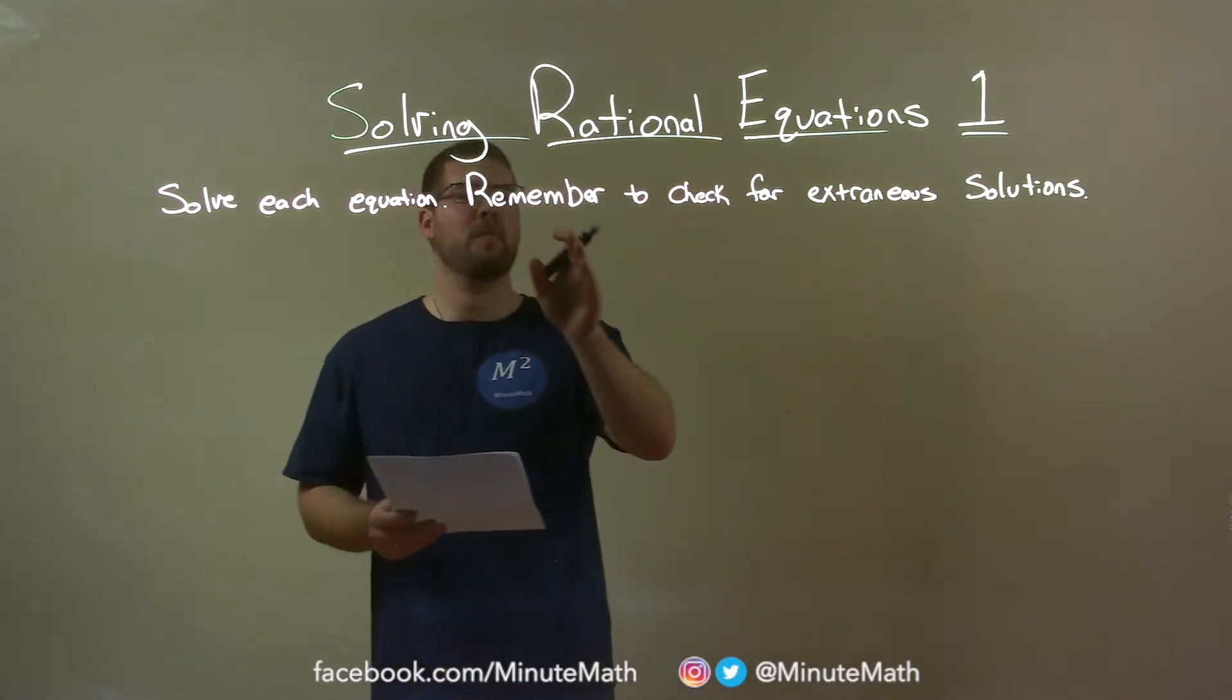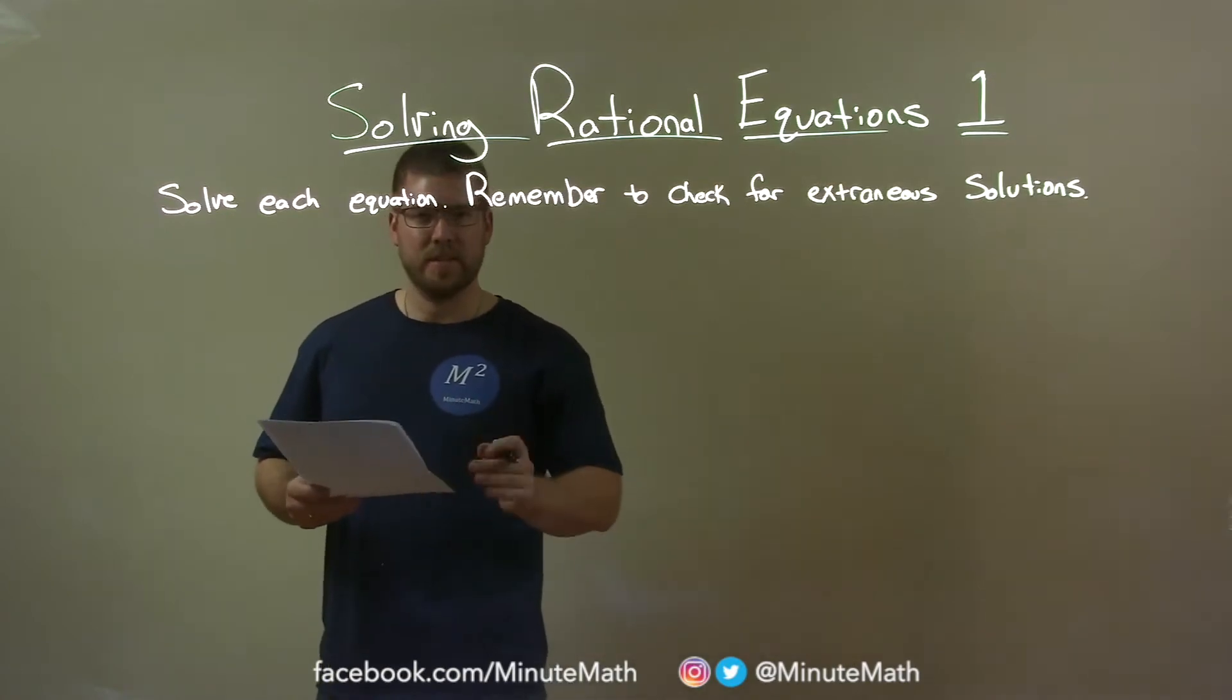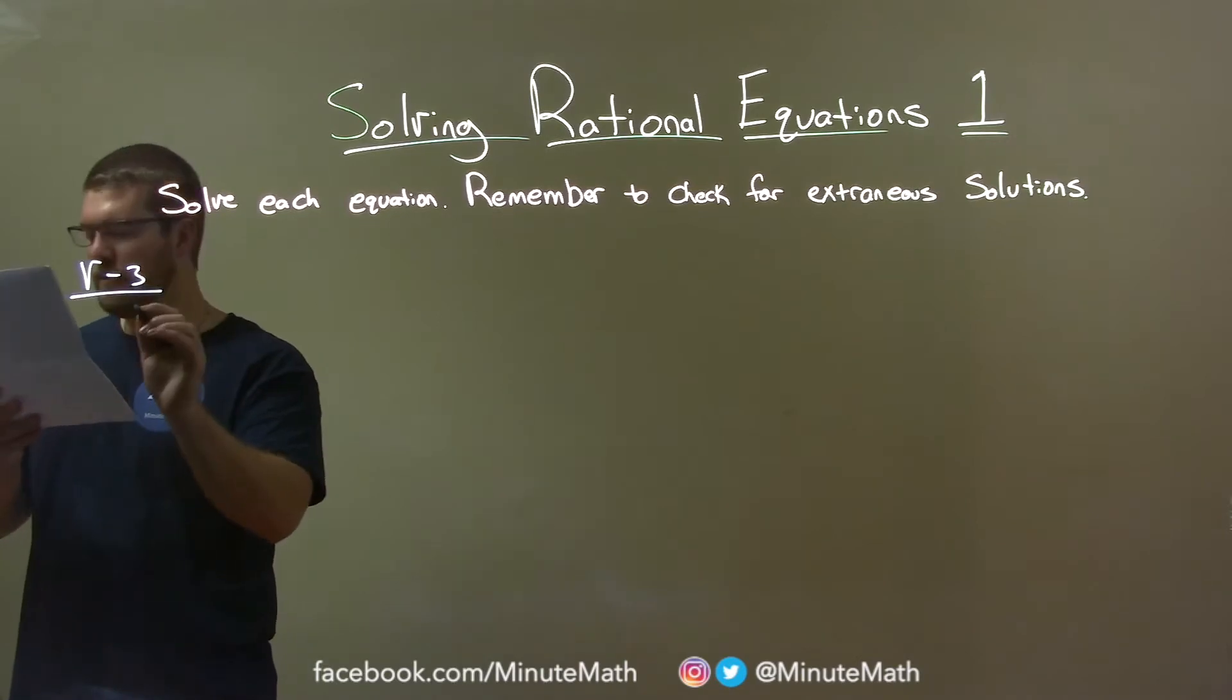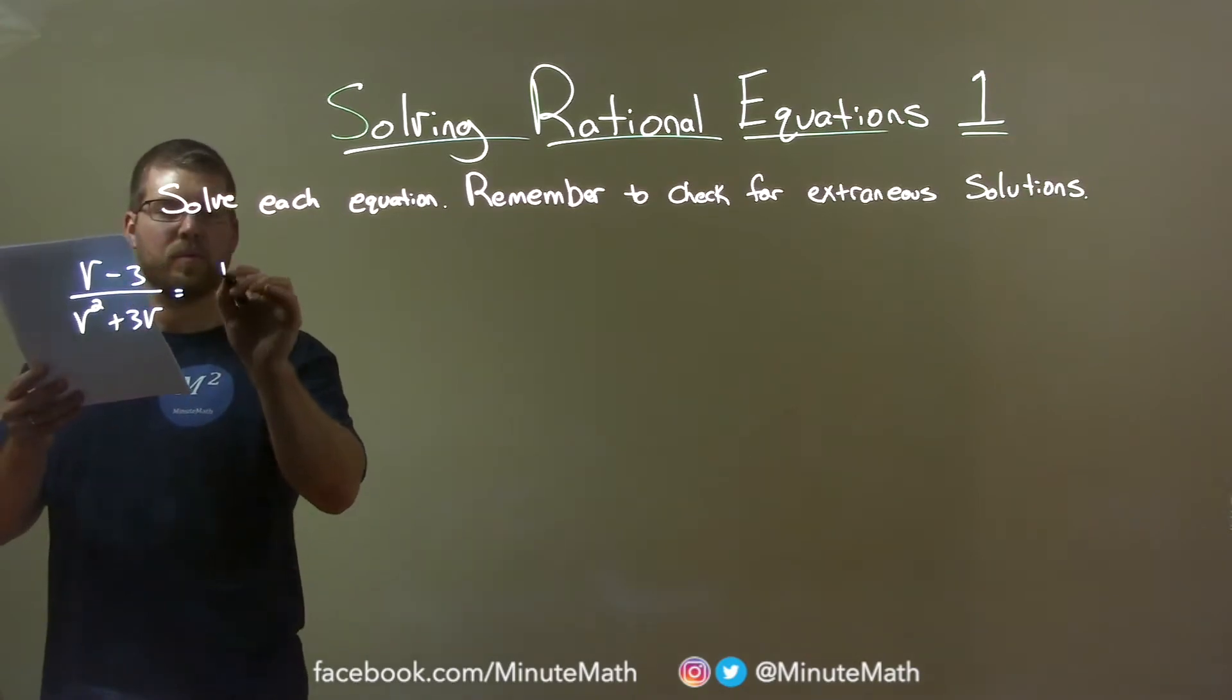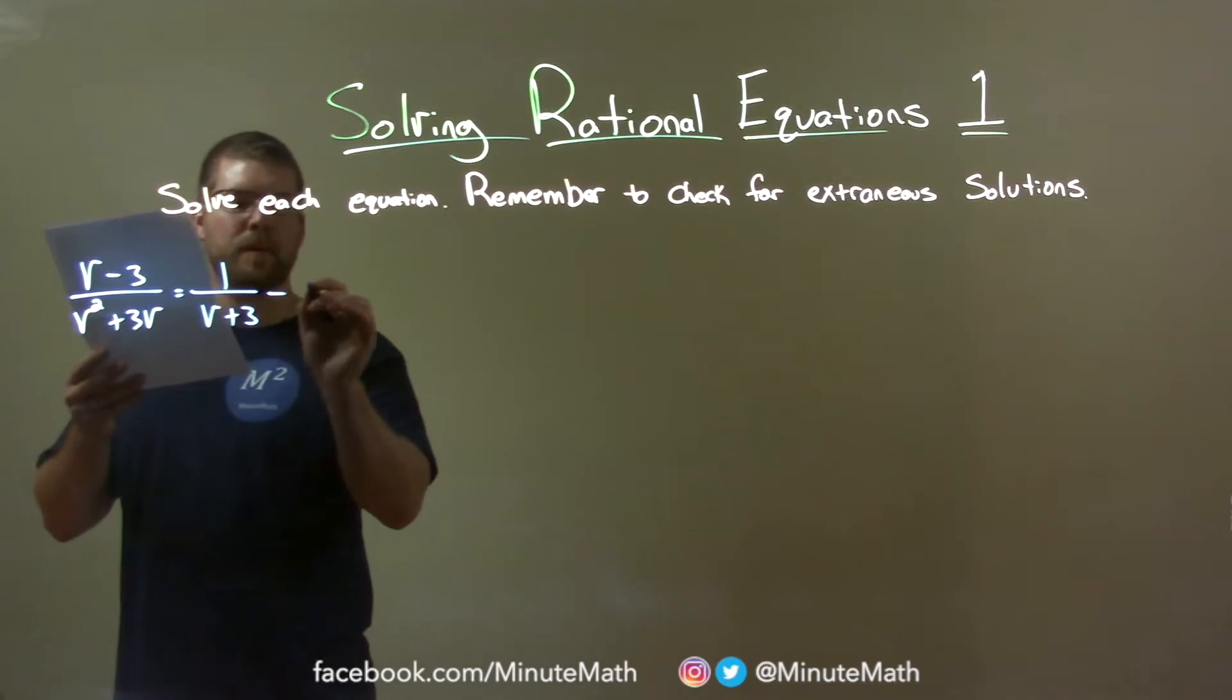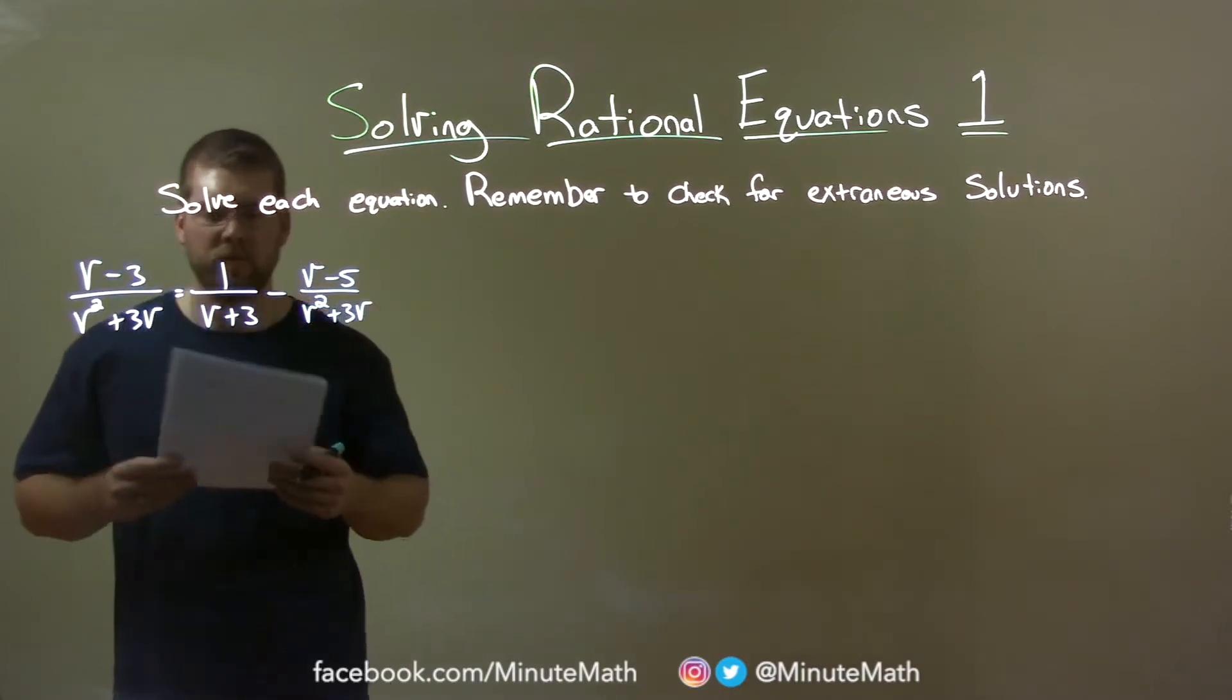We're going to solve each equation and remember to check for extraneous solutions. So if I was given this problem: v minus 3 over v squared plus 3v equals 1 over v plus 3 minus v minus 5 over v squared plus 3v.